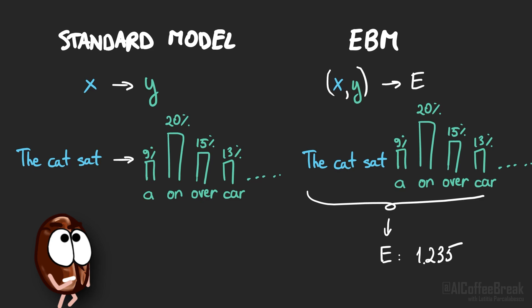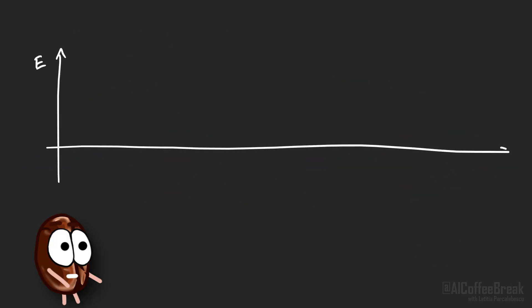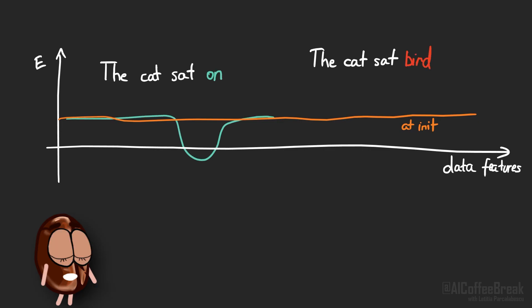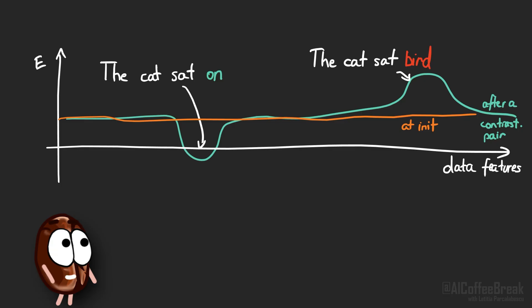The key thing to keep in mind is this: in EBMs, the answer you want to evaluate isn't the output — it's part of the input. The model's job is not to generate probabilities directly, but to judge how compatible an input-answer pair is. One can train such an EBM via contrastive pairs: show it a question with the correct continuation from the dataset and the same question with a random wrong continuation, then push the energy down for the correct one and up for the wrong one.